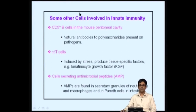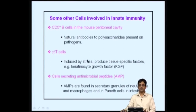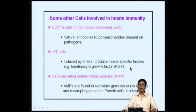Other cells involved in innate immunity include CD5-positive B cells (also known as B1 B cells) in the mouse peritoneal cavity, which produce natural antibodies to polysaccharides present on microbes, limiting pathogen spread. Gamma-delta T cells are present on different epithelial surfaces and in blood. Those induced upon stress produce tissue-specific factors — such as keratinocyte growth factor, important in skin healing. Paneth cells in the intestines produce antimicrobial peptides that lower bacterial colony-forming unit numbers in the small intestine.